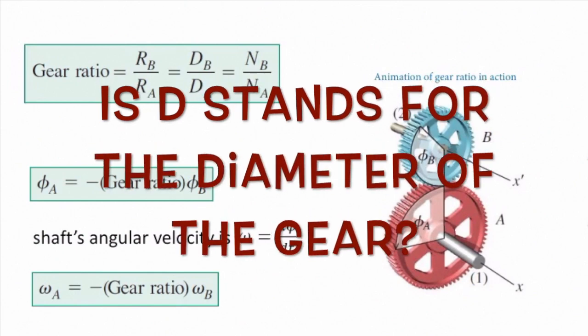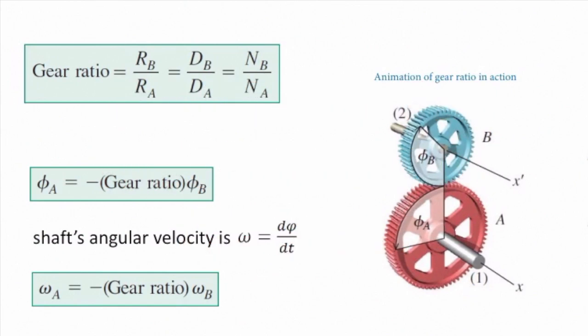In the equation, does teeth stand for diameter? Yes. Here, R stands for radius, D stands for diameter, and N stands for the number of teeth. Because it's sometimes easier to count the number of teeth instead of determining the diameter.